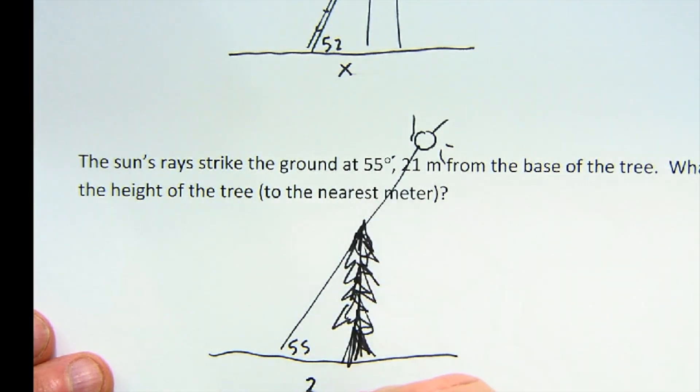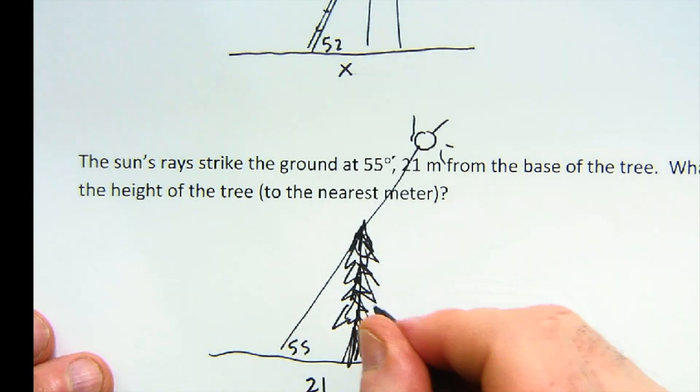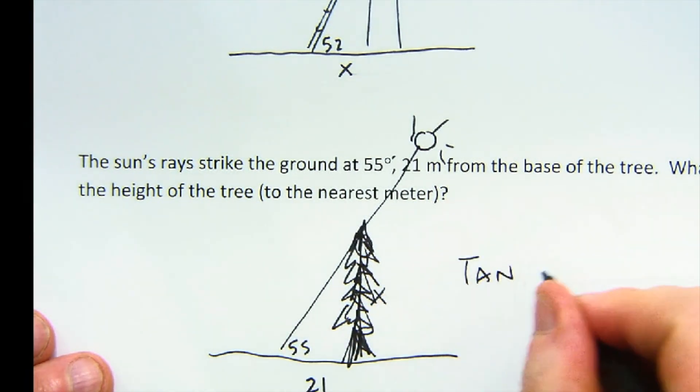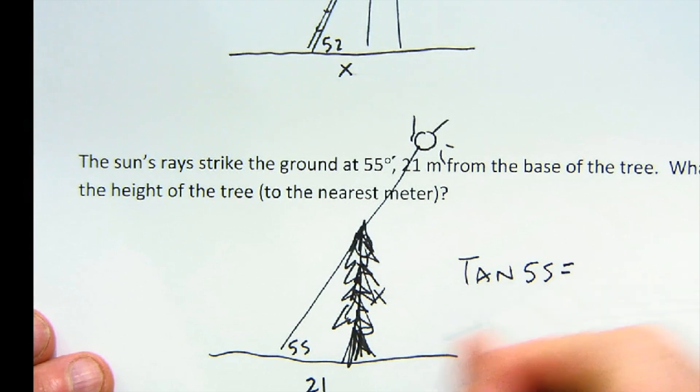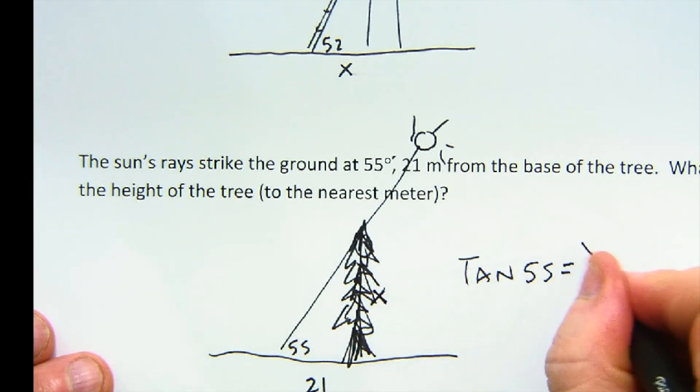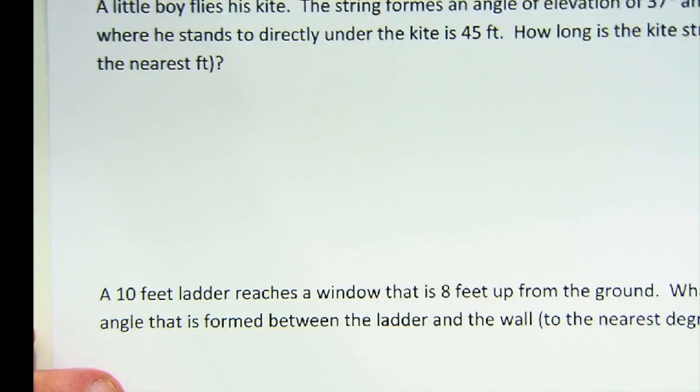And 21 meters from the base of the tree. What is the height of our tree? This would be the tangent of 55 is opposite height over adjacent 21. That's how I'd solve this. Maybe one more here if I got a few minutes. Boy flying a kite.